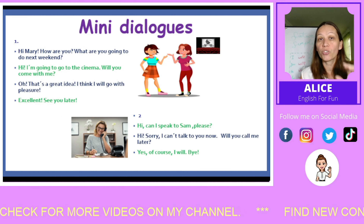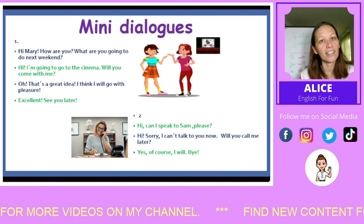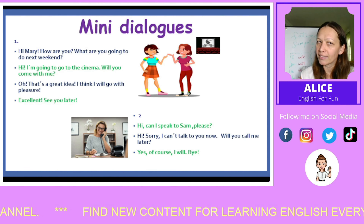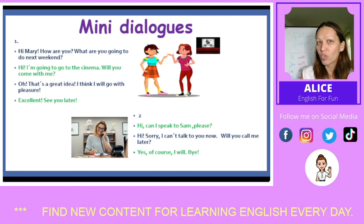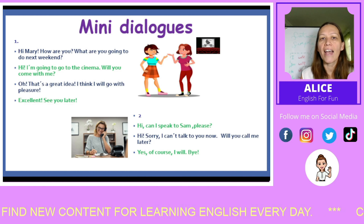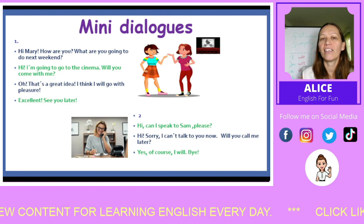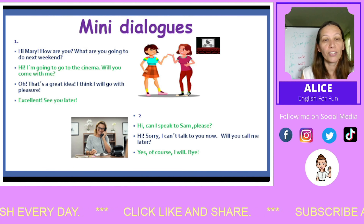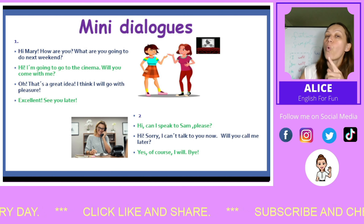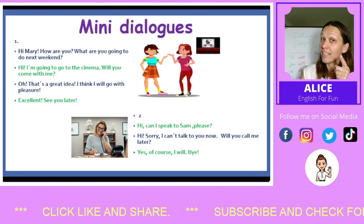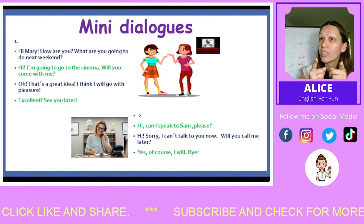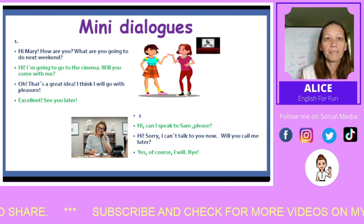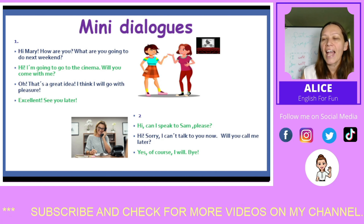Here we have our last section — practice using future simple tense in mini dialogues. Dialogue number one, repeat after me. 'Hi Mary, how are you? What are you going to do next weekend?' 'Hi, I'm going to go to the cinema. Will you come with me?' 'Oh, that's a great idea. I think I'll go with you, with pleasure.' 'Excellent. See you later.' Now I will read blue and you read green.